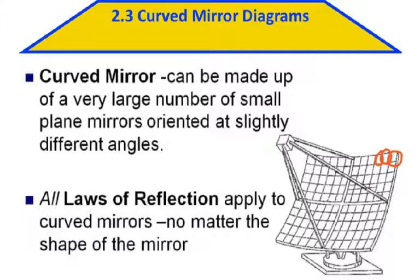The laws of reflection that we studied with plane mirrors still apply. Light gets reflected at the same angle at which it was received, but with the mirror being curved, it just makes the geometry a little more difficult. We'll get into what that looks like in a little bit.